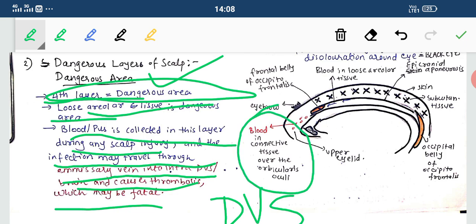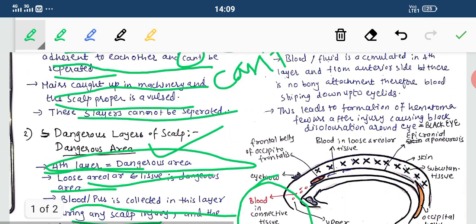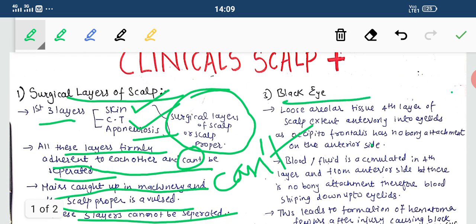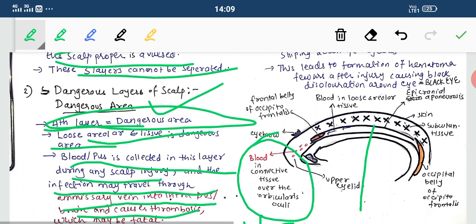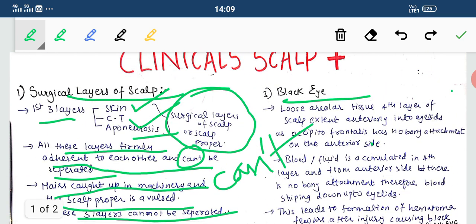You can see here the blood is collected in the connective tissue over the orbicularis oculi. This is our next theme: the black eye. The loose areolar tissue, the fourth layer of the scalp, extends anteriorly into the eyelids as the occipitofrontalis muscle has no bony attachment on the anterior side. When we studied the five layers in the first lecture, I told you the extent of the fourth layer in the anterior part is up to the eyelids because the occipitofrontalis muscle has no bony attachment.